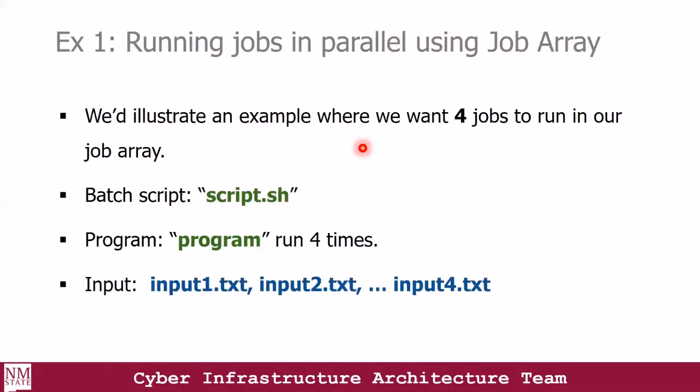For this example, we want to run our job in parallel using the job array method in Slurm. The main important files are the script.sh file, the program file, and the input files. Job arrays are very good for submitting many jobs that differ very little from each other. The idea is to create one batch script file to submit hundreds of thousands of jobs, instead of creating an individual file for each job that only differs a bit.